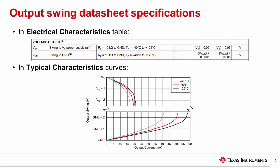These specifications are found in the electrical characteristics table. Often, output swing versus output current is provided in the form of a set of curves in the typical characteristics section of the datasheet. More information can be derived from this graph, such as current capability of the output stage and its behavior over temperature.